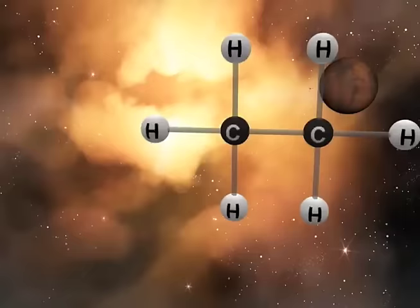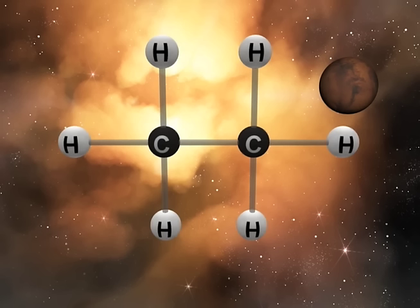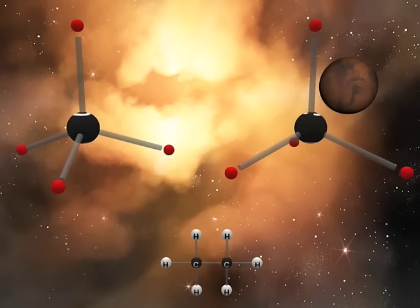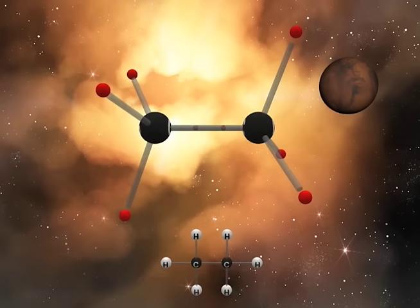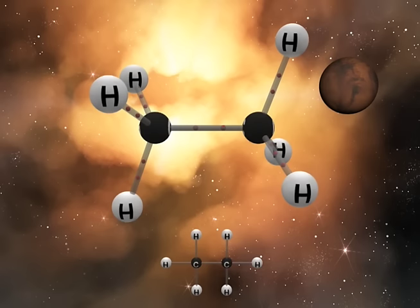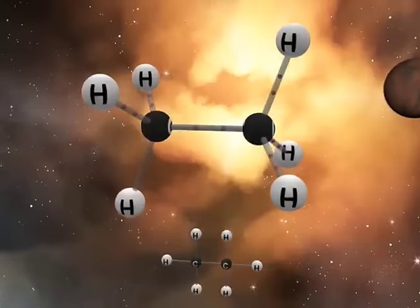Another simple carbon compound that utilizes sp3 carbons is ethane. From the two-dimensional Lewis diagram, we see that each carbon has four single bonds. Thus, both carbons are sp3 hybridized. Starting with two sp3 hybridized building blocks, we can start to construct the molecule in three dimensions by forming the C-C sigma bond. Next, the six hydrogen sigma bonds are formed, which affords the final three-dimensional structure for ethane.